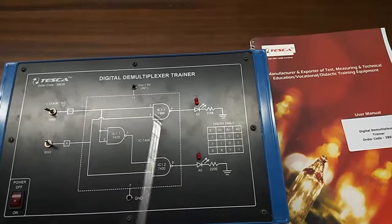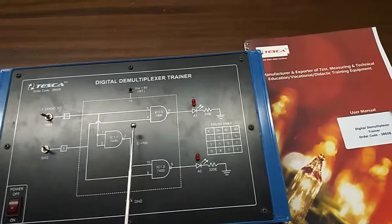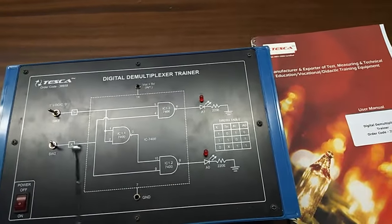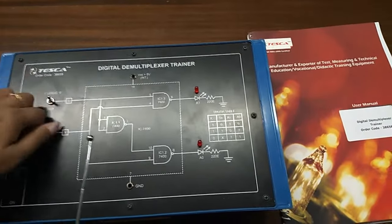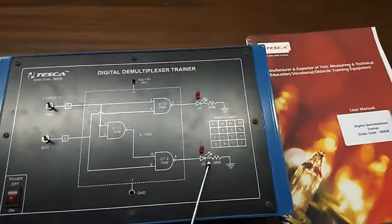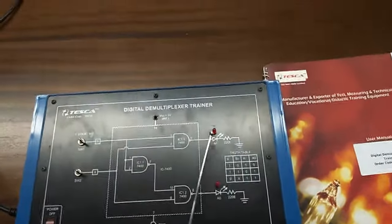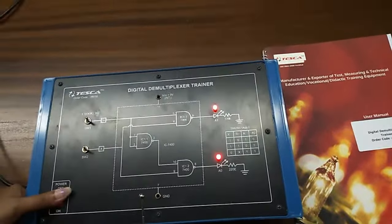These are the NAND gates that have been used to build the demultiplexer circuit. This is the switch, and these are the LEDs to indicate the status. This is the main switch to turn the kit on and off.